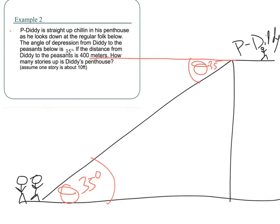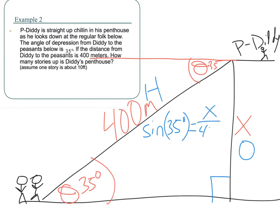Now, the distance from Diddy to the peasants is 400 meters, meaning this guy right here is 400 meters. How many stories up is Diddy's penthouse? Well, we want to figure out how high up it is. So, let's figure out what X is. Well, with respect to the 35 degree angle, this is my opposite side. And, of course, since this is my right angle, this is my hypotenuse. So, I'm using sine. Sine of 35 degrees is equal to my opposite, which is X, over my hypotenuse, which is 400. When I plug that into my calculator, sine of 35 times 400, that gets X by itself. It means X is equal to about 229.43 meters.